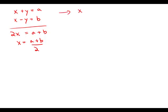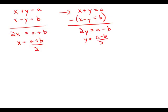Similarly, if we take these two equations and we subtract them, then the x's cancel. We get y minus negative y, which is 2y equals a minus b, and we get y equals a minus b over 2.